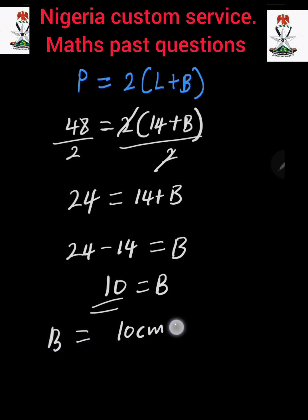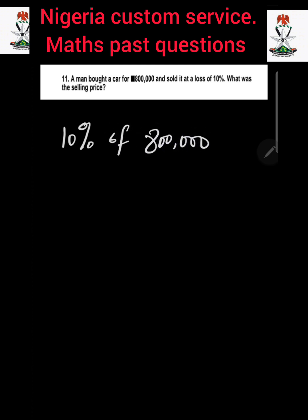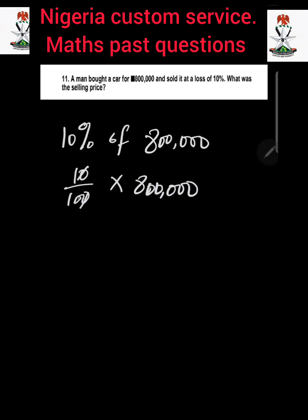Question number 11: A man bought a car for 800,000 naira and sold it at a loss of 10%. What was the selling price? The selling price is the actual money minus the loss, which is 10% of the purchase price. The first thing we need to do is get 10% of 800,000 naira. 10 over 100 multiplied by 800,000 — cancelling zeros — gives us 80,000. This is the 10% loss.